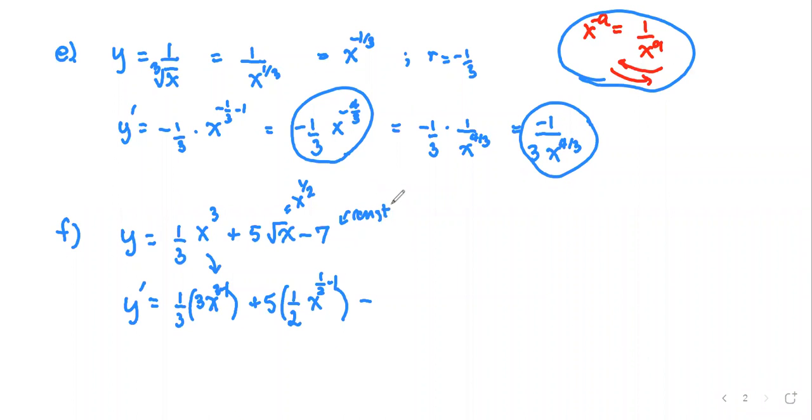We got the detail work done. Next we just clean up each term to get the nice result. For the first one, three and three reduce, then x to the power three minus one becomes x to the second. Next term, five times one half becomes five over two x to the power negative one over two and minus zero.